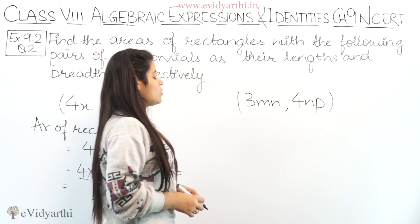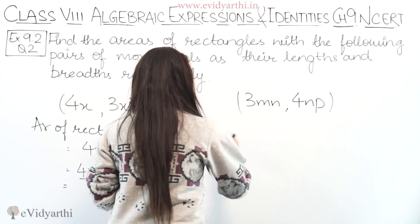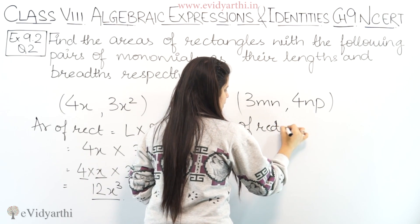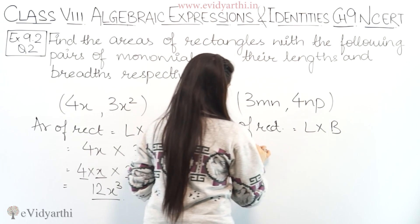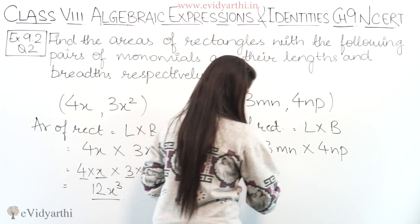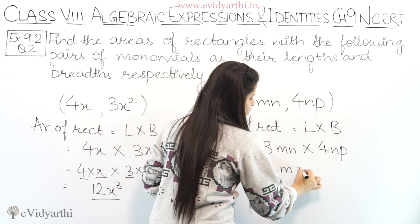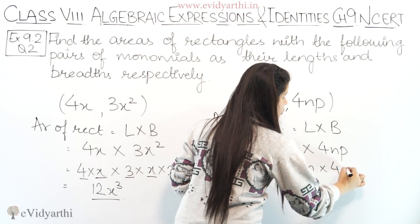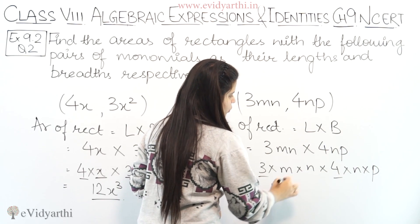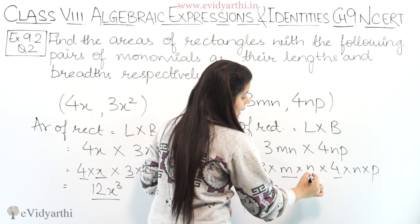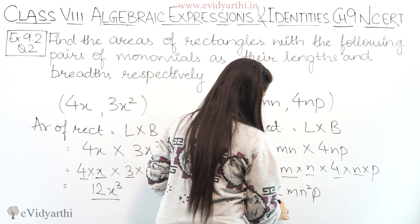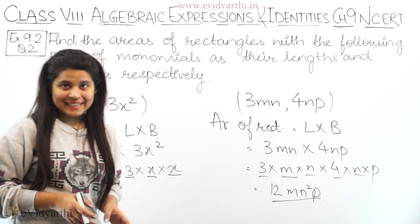The next part is 3mn and 4np. Area of rectangle equals length into breadth: 3mn into 4np. Expanding: 3 into m into n into 4 into n into p. So 3 into 4 is 12. m appears once, so we write m. n appears twice, so we get n². p appears once. The answer is 12mn²p.